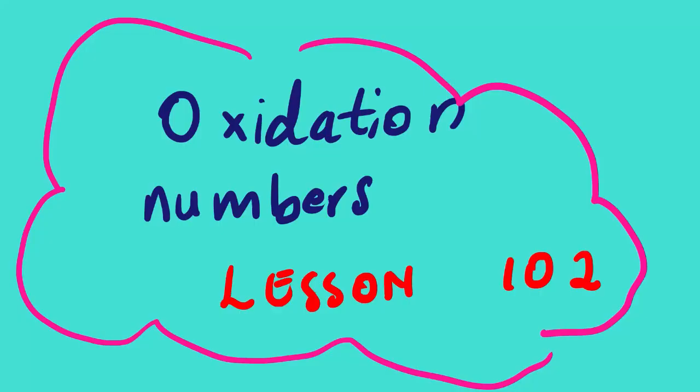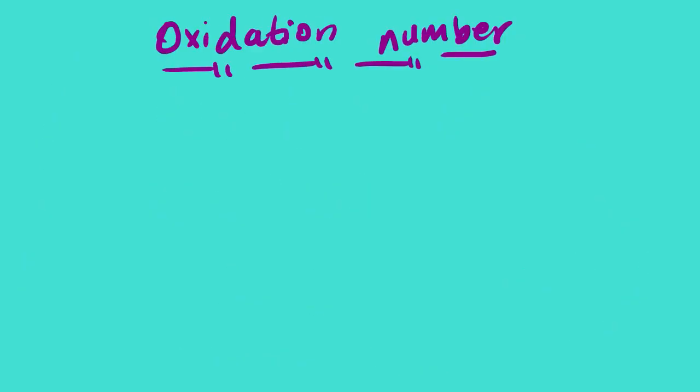Our lesson for today is oxidation numbers, lesson 102. Before we look at the rules of assigning oxidation numbers — or oxidation state, it's one and the same thing — let us try to understand what is oxidation number. Oxidation number is defined as the charge the atom would have if electrons were not shared but were transferred completely.